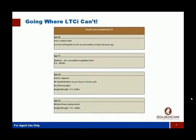These are actual cases accepted by GTL. The top one: age 80, using a wheelchair, lost her left leg due to an automobile accident — a no-brainer decline for long-term care insurance, but we were able to get coverage with this policy. Age 71, diabetic, 6'2", 340 pounds — coverage obtained. Age 64, eight back surgeries, 80 milligrams of methadone three times a day for chronic pain and fibromyalgia — coverage obtained. Age 55, 5'2", 232 pounds, with mobility issues due to bilateral knee replacement — we were able to get coverage with this product.